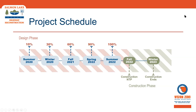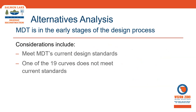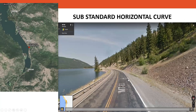I'll turn it over to Lisa Fisher with HDR to provide more information on the design work. We kicked off the design earlier this year by conducting an alternative analysis evaluating five design alternatives focused on different roadway reconstruction options, including shifting the roadway slightly left or right and evaluating shoulder widths ranging from three to six feet. Out of the 19 horizontal curves within the project limits, one did not meet current design standards — we'll show you that location now.